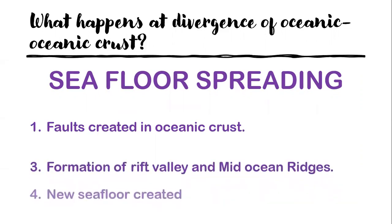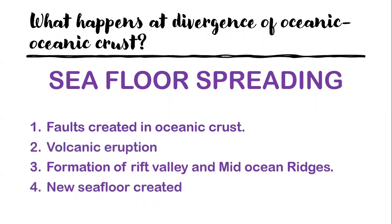Once the fault lines are created, we are going to have magma rising from those fault lines and experience volcanic eruption. After the volcanic eruption, we have the formation of a rift valley. This area where the two plates are moving far away becomes a rift valley, and because of the volcanic eruptions, we have mid-ocean ridges — mountains at the center of the ocean.